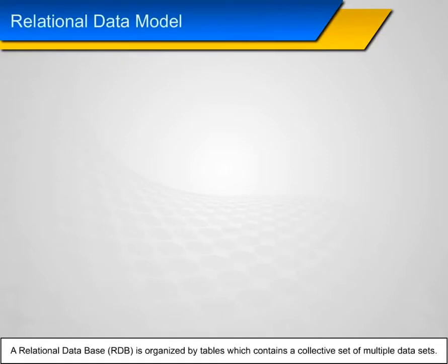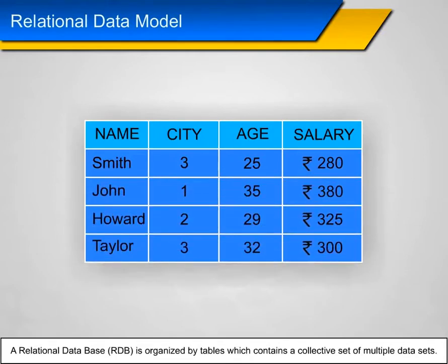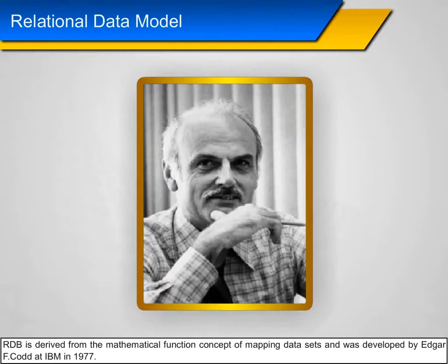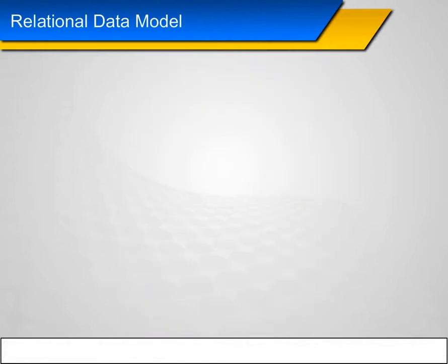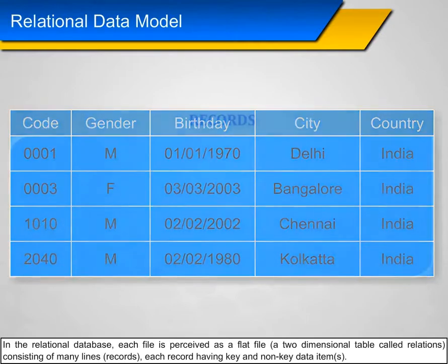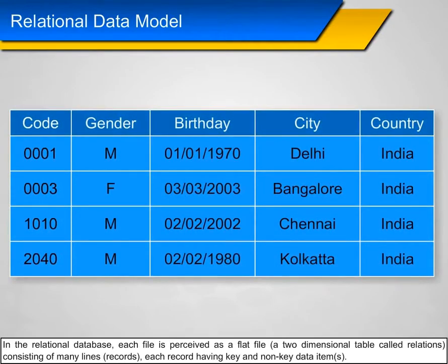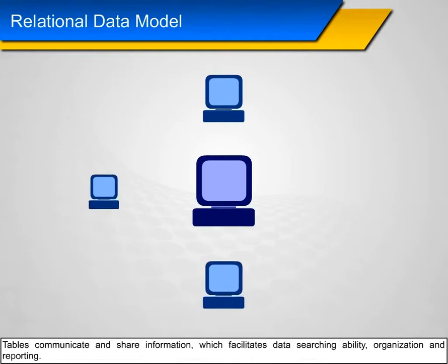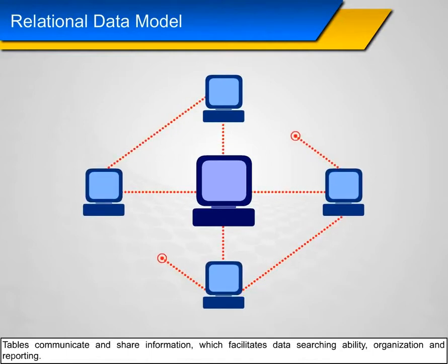Relational Data Model: A Relational Database (RDB) is organized by tables which contain a collective set of multiple data sets. RDB is derived from the mathematical function concept of mapping data sets and was developed by Edgar F. Codd at IBM in 1977. In the relational database, each file is perceived as a flat file — a two-dimensional table called a relation — consisting of many records, each record having key and non-key data items. Tables communicate and share information, which facilitates data searching ability, organization, and reporting.